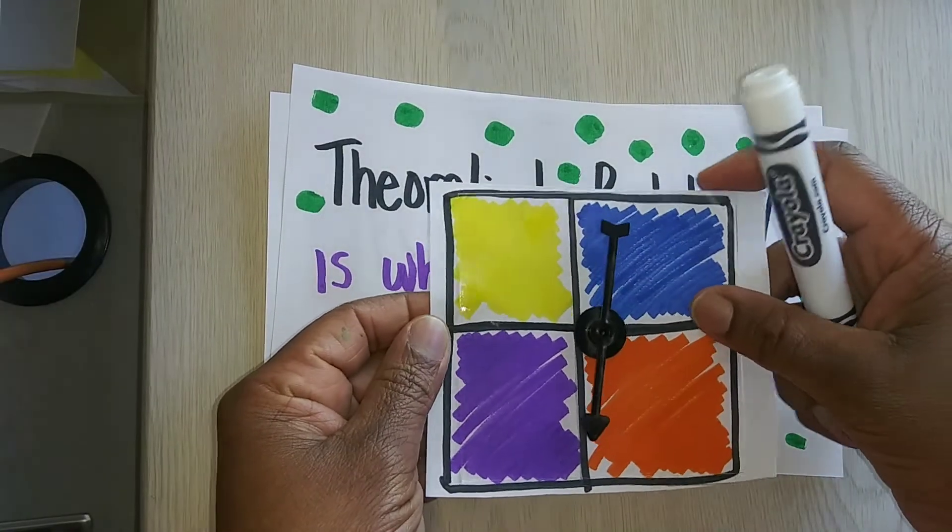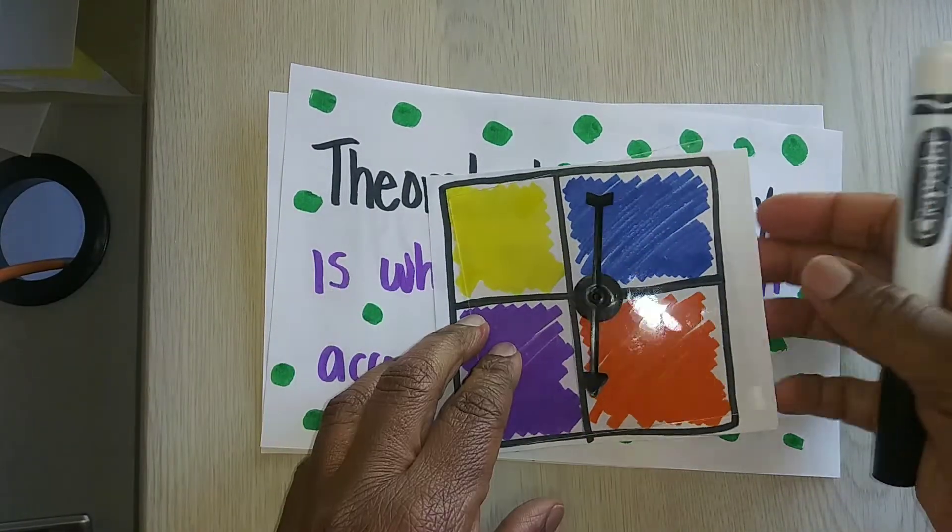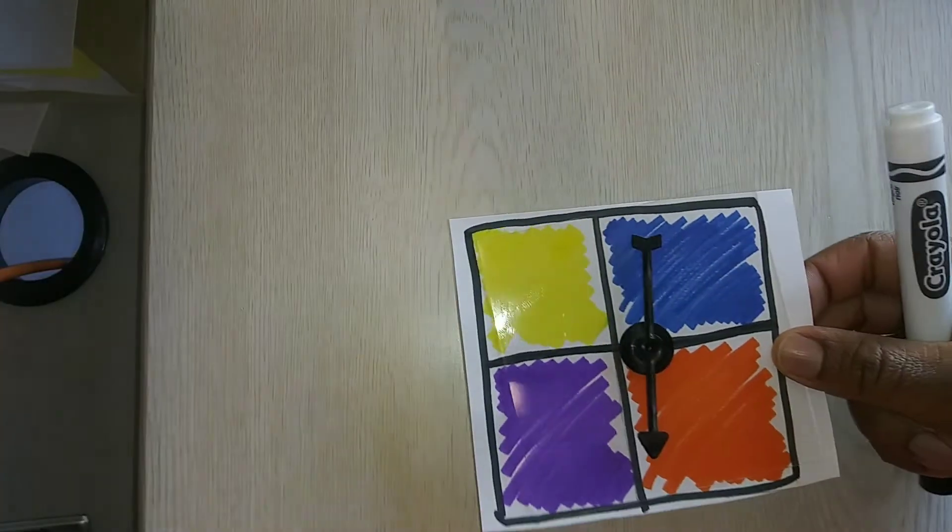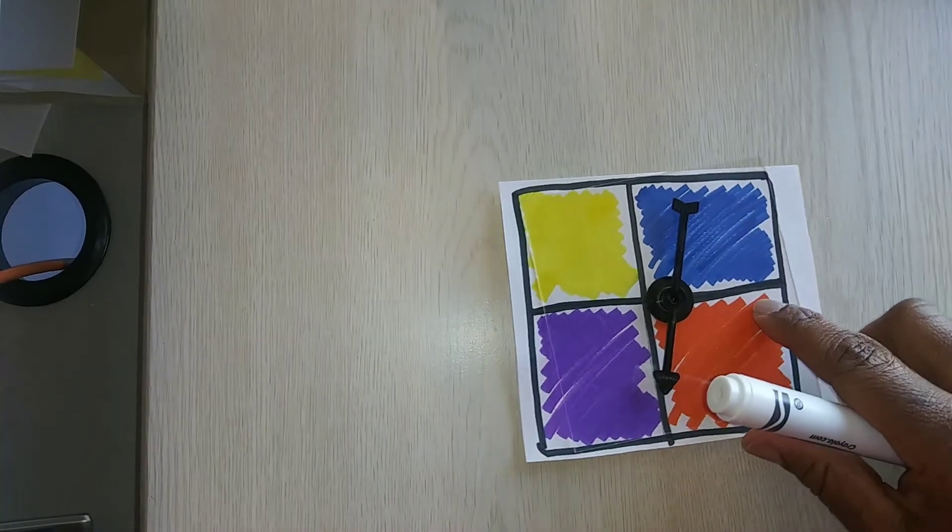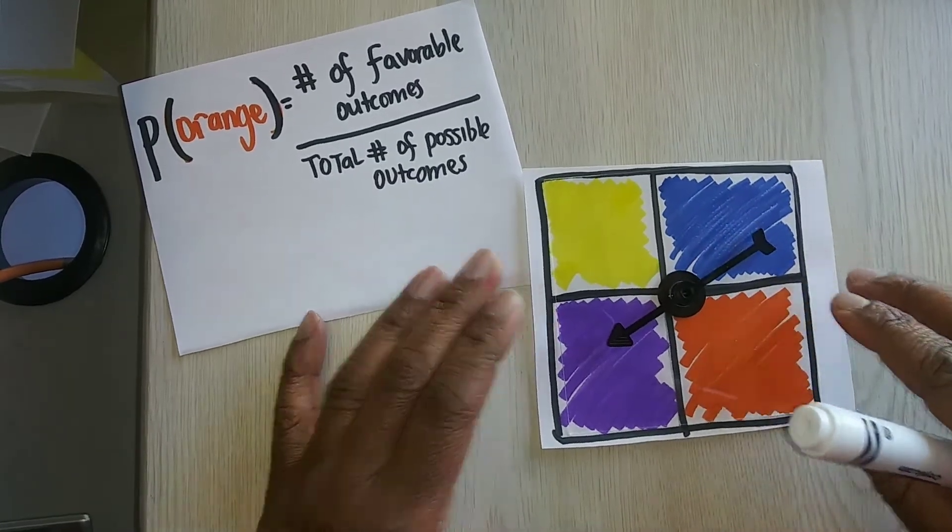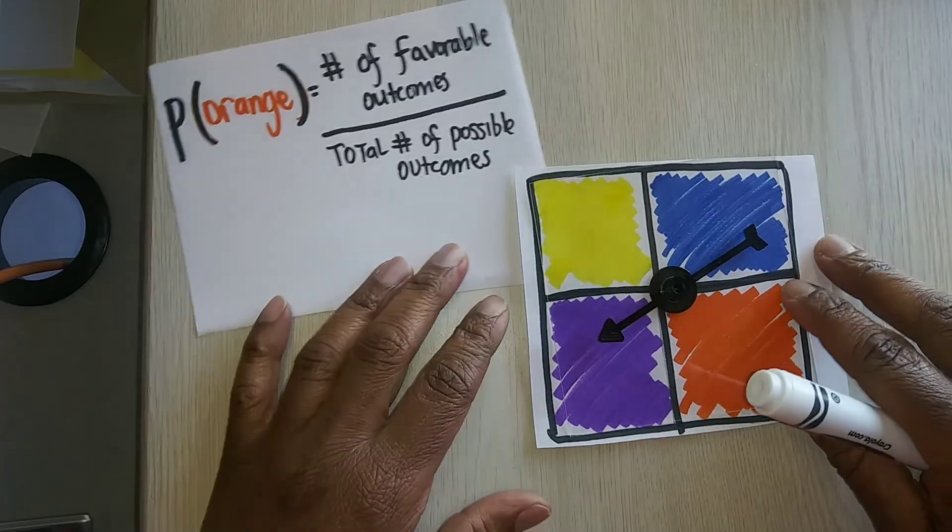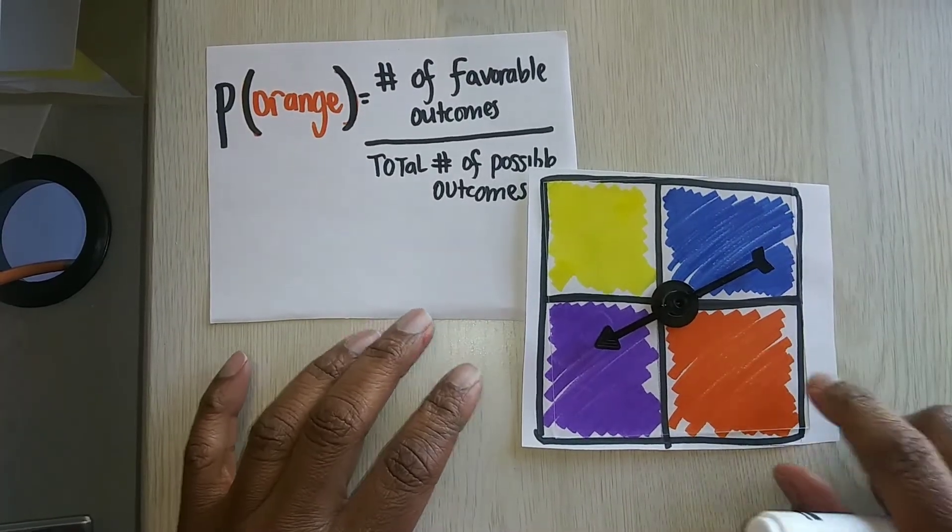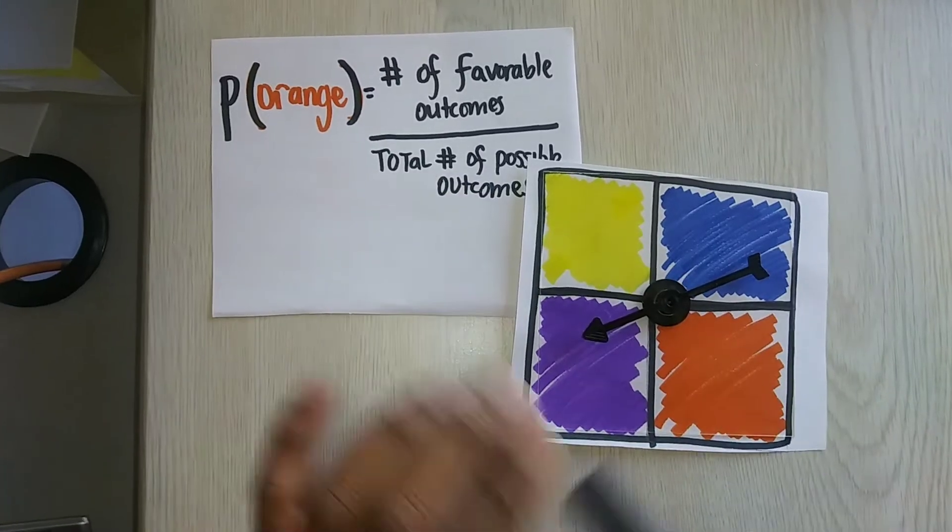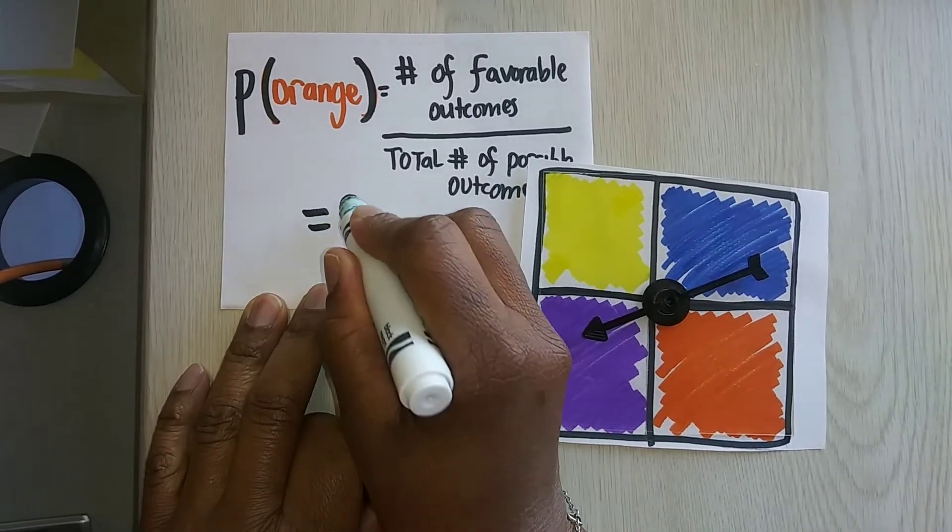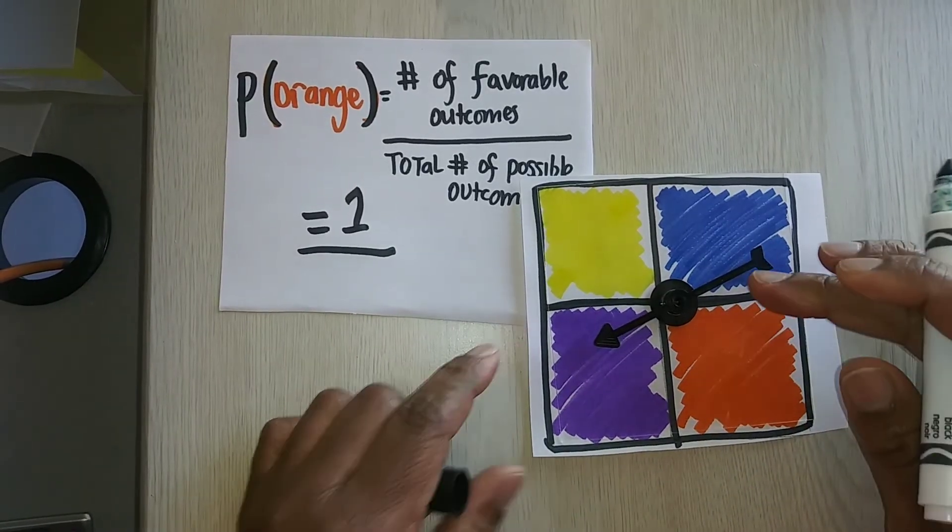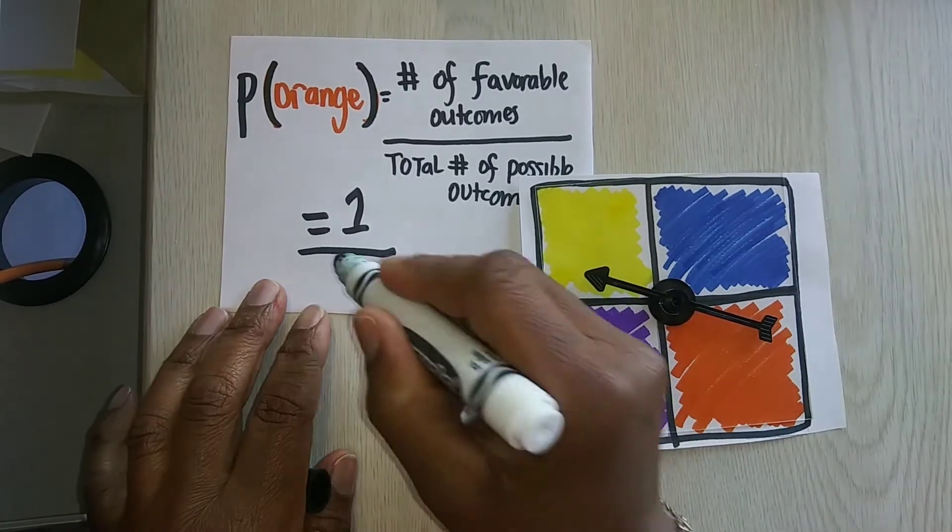So take a look at this spinner. If I have this spinner, I have four equal sections, all with different colors. And if I want to find out what is the probability that this will land on orange, what I need to do is I need to actually see how many favorable outcomes there are. Well, there's only one that's orange.